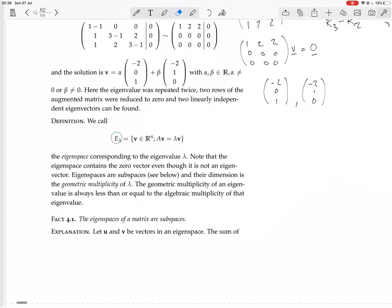Okay, so the dimension of the eigenspace is the geometric multiplicity of lambda. It's called the geometric multiplicity of lambda. Remember, the algebraic multiplicity of lambda is the number of times its root of the characteristic polynomial. And then the geometric multiplicity is the dimension of the eigenspace for that eigenvalue. The geometric multiplicity of an eigenvalue is always less than or equal to the algebraic multiplicity of that eigenvalue.